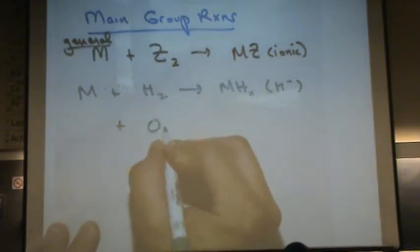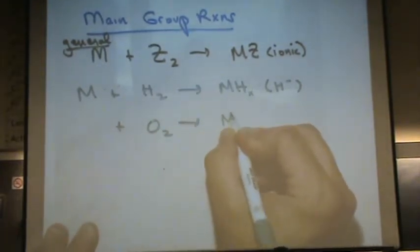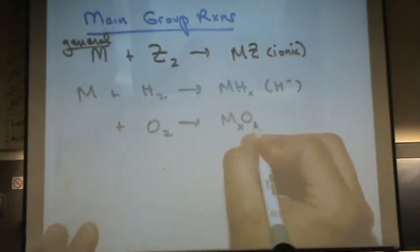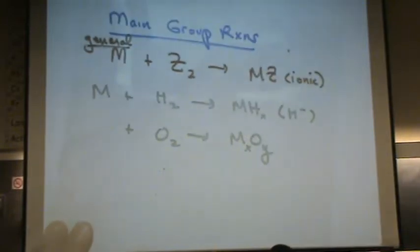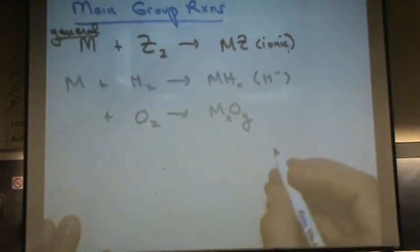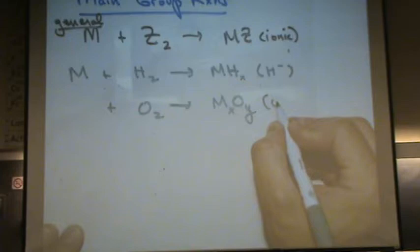You can have a metal plus O2 and that makes a metal oxide. That would be like calcium oxide, magnesium oxide, things like that. And this is O2 minus.